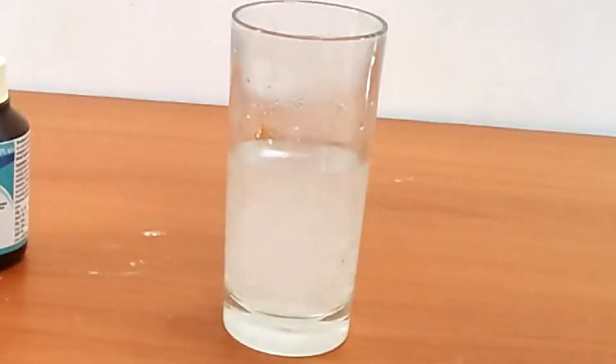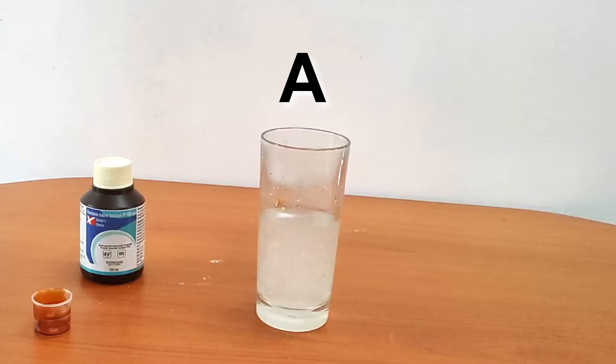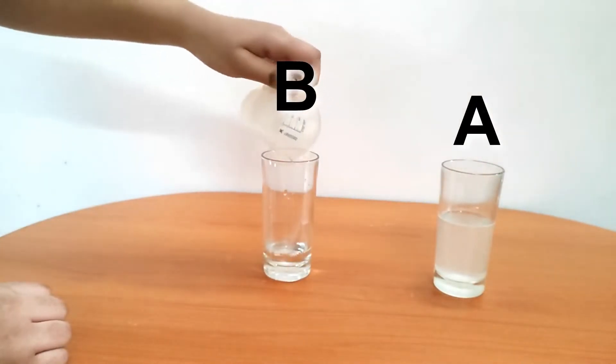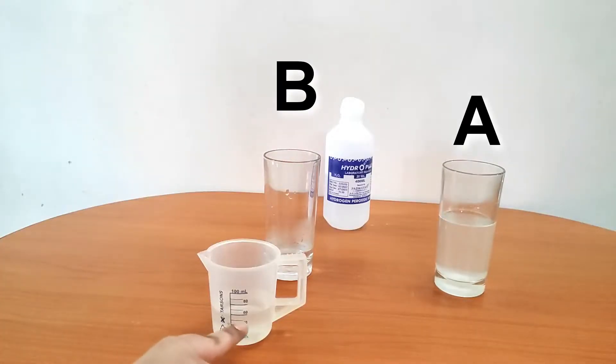We will call this first glass solution A. Now we will make solution B. We will measure 30 ml of water and put it in our glass B. Now we will pour 60 milliliters of hydrogen peroxide in glass B.